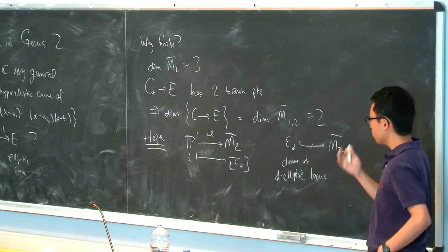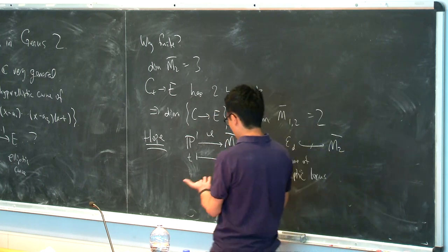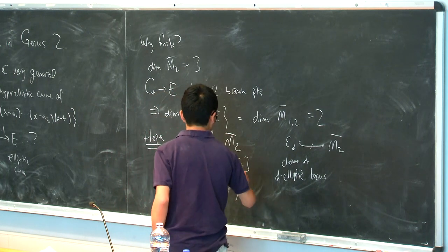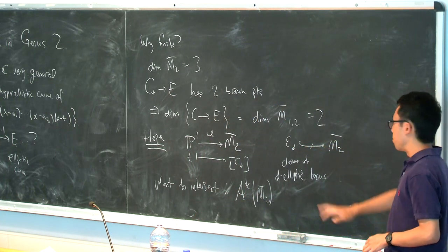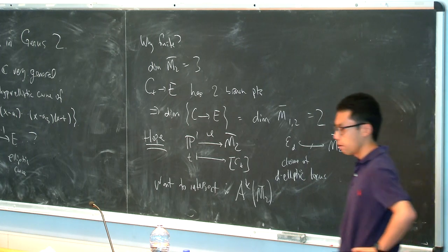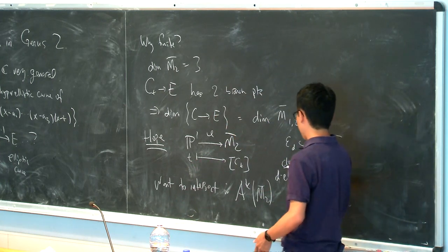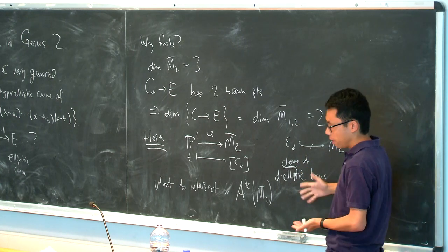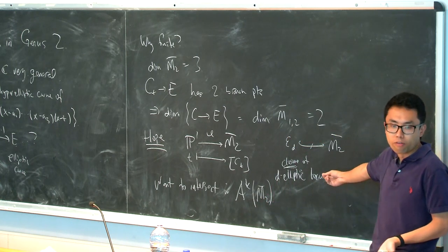And what you want to do is you want to intersect these classes, right? So you want to take these classes in the Chow ring of M2 bar, and you want to multiply them. So I want to intersect in the Chow ring, or if you want, the cohomology ring of M2 bar. And by M2 bar, I will always mean the stack. All right. So the problem with this, as I've stated it, is that I've done something drastic, which is I've said, take some locus and take its closure.